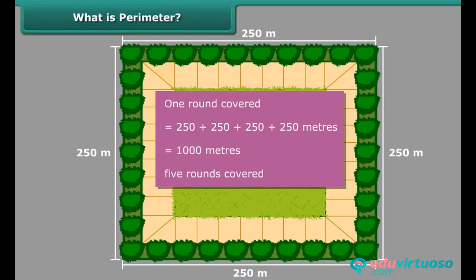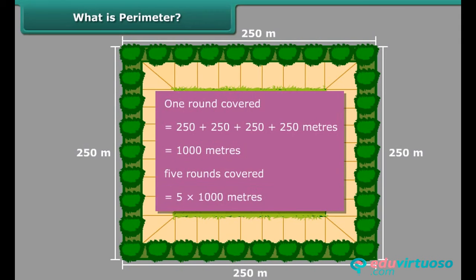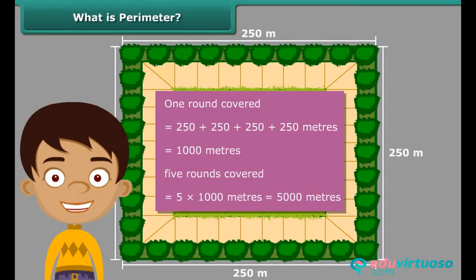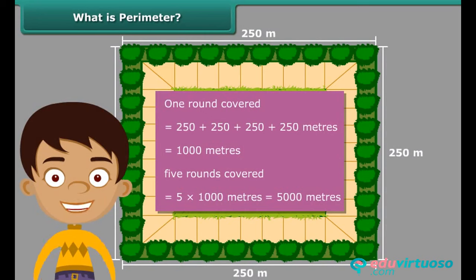Therefore, in five rounds, you covered 5 into 1000 meters, that is 5000 meters or 5 kilometers. Now you are ready to answer your mother's question. In this calculation, we used the concept of perimeter when we worked out the distance you covered in one round.